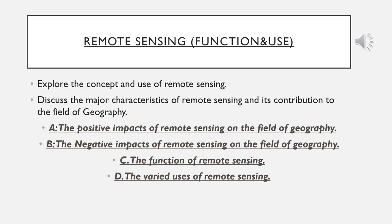The second part of our unit is going to be about remote sensing. We're going to study and go deeply into its function and use, and discuss the major characteristics of remote sensing and its contribution to the field of geography through a collective task — studying the positive impacts, negative impacts, the function, and specifically the various uses of remote sensing across various groups.